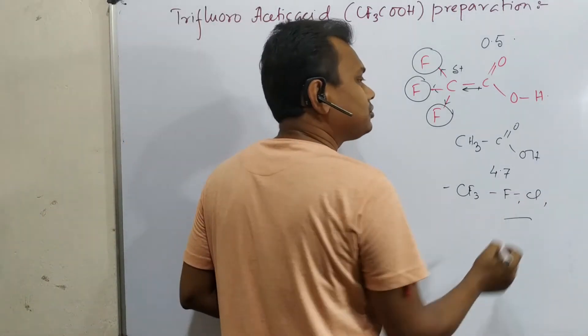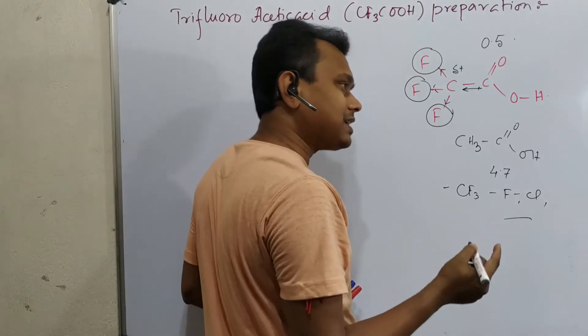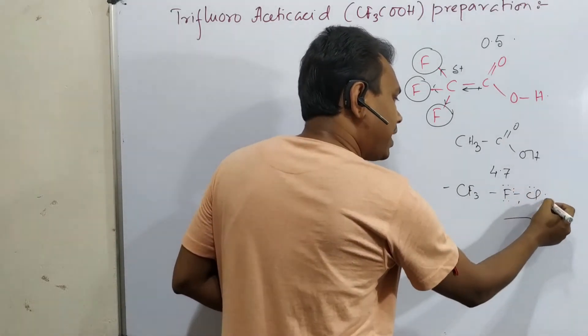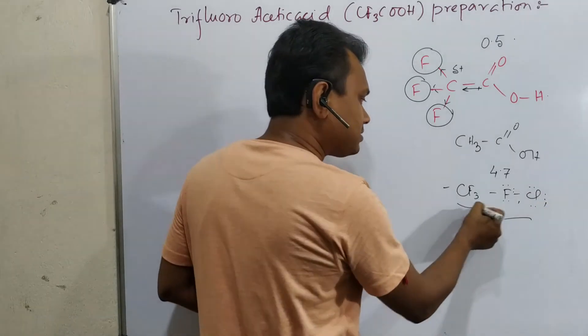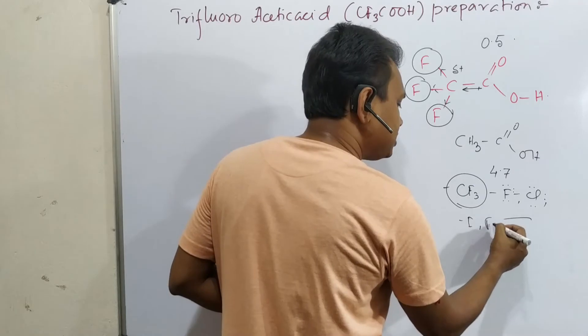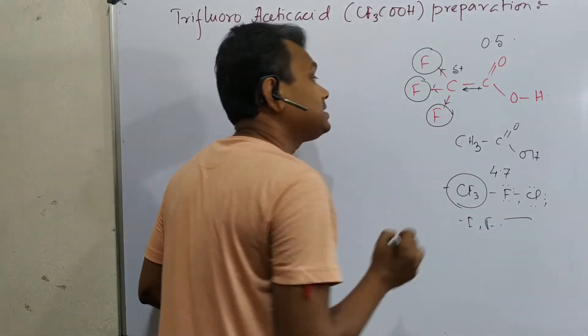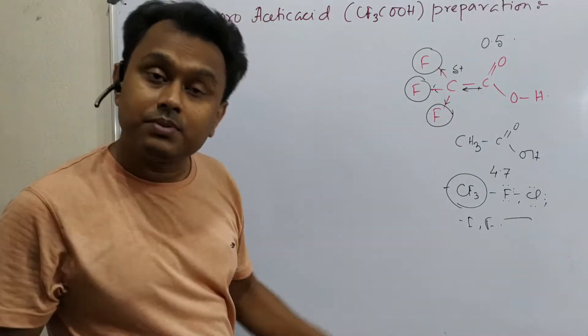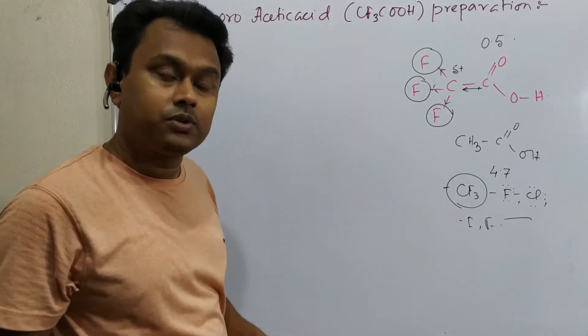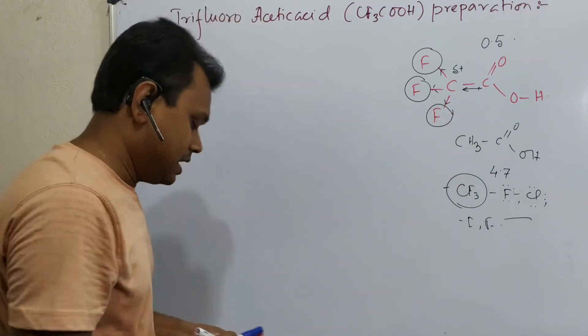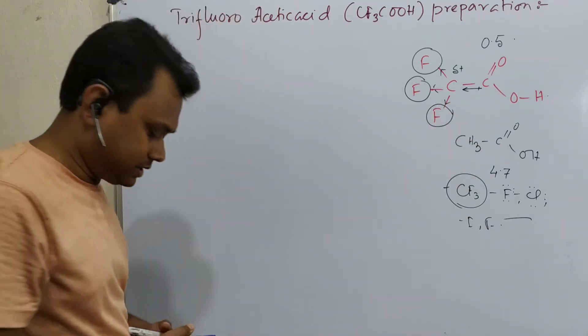It is said that the CF3 group's withdrawal capability is between chlorine and fluorine, so you can understand how much withdrawing it is. We know halogens have both minus I and plus R because of these three lone pairs present on them, but minus I dominates. But in this case of CF3, it is only minus I and it is actually sigma withdrawing. So this is the uniqueness of this group.